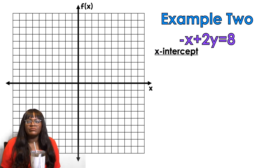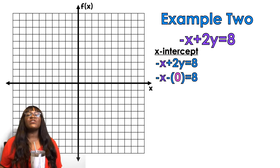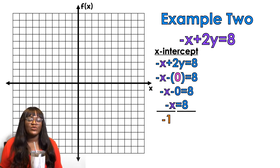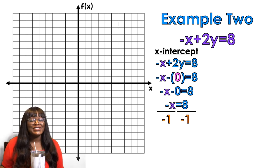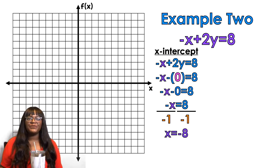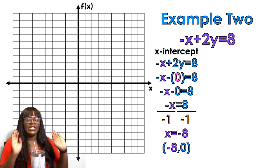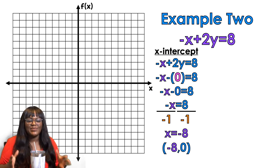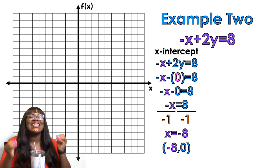For the x-intercept of example two, we plug in 0 for y and simplify. I get negative x minus 0, which is just negative x equals 8. Divide by negative 1 to get x by itself — it's a common mistake that students forget about the negative. So x equals negative 8, and our coordinate is (negative 8, 0). Don't forget the parentheses — that's how I know you're talking about a coordinate.